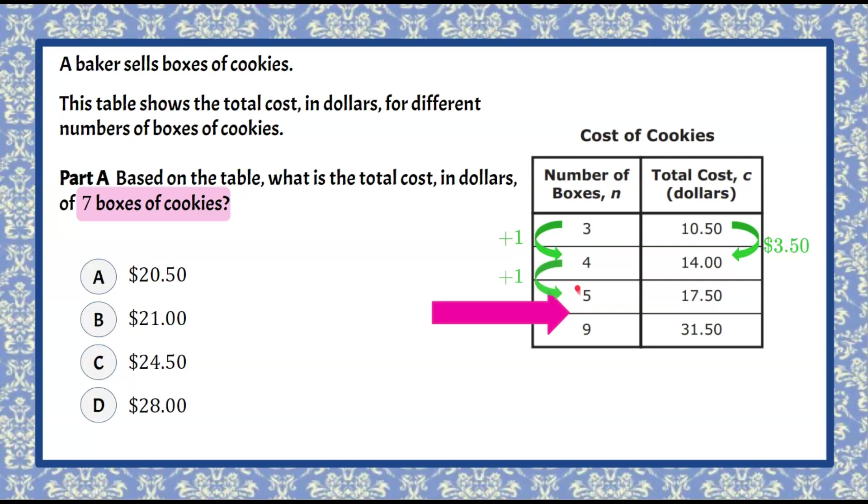When we go from four to five we've increased by one box and then from 14 to 17.50 is another increase of three dollars and fifty cents. So we can see as we're increasing by one we're increasing our cost by three dollars and fifty cents. Then when we come over here we've increased by four boxes so if we do four times three fifty that would be fourteen dollars and when we do that it is true. Seventeen fifty plus fourteen dollars is thirty one fifty.